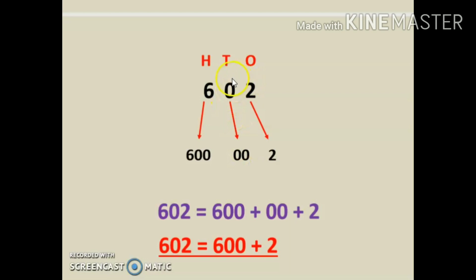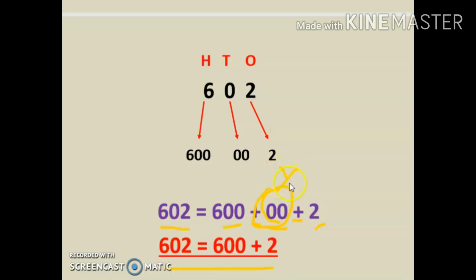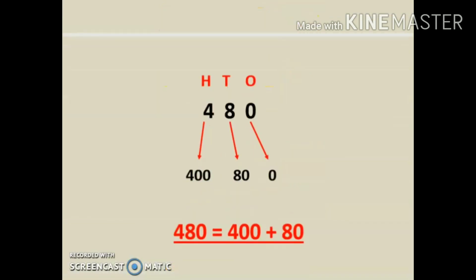Remember that the place value of zero is always zero, no matter where it is — ones place, tens place, or hundreds place. So six hundred two equals six hundred plus zero plus two. But since zero has no value, we ignore it and write six hundred plus two.